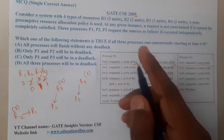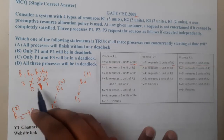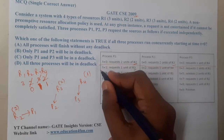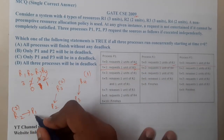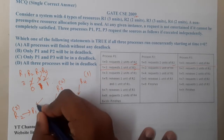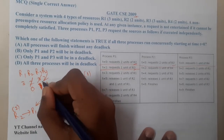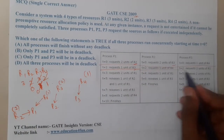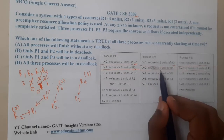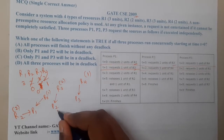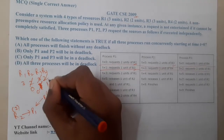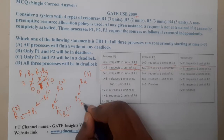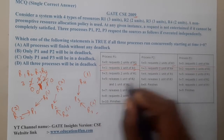At time t1, P1 requests 1 unit of R3 — that R3 unit is allocated and done. At time t2, P2 requests 1 unit of R4, which is also fully allocated. Then P3 requests 2 units of R1, which are allocated and done.